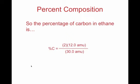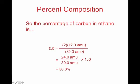An example problem: the percent of carbon in ethane. If we want to know what percent of the ethane molecule is carbon, we take two carbon atoms times 12.0 AMUs, divided by the total molecular mass of 30 AMUs, times 100. We get 80% — so 80% of ethane is carbon, which means the remaining 20% is hydrogen.